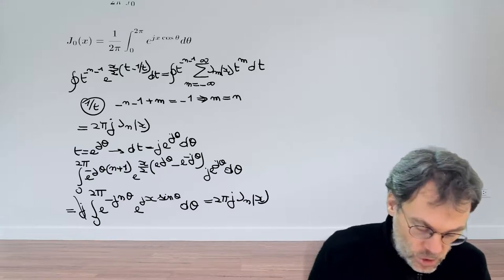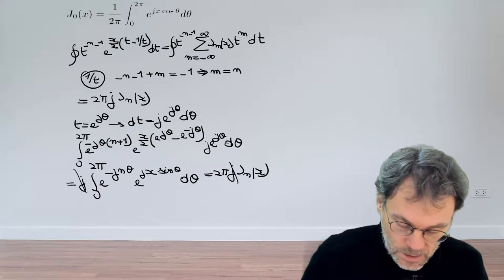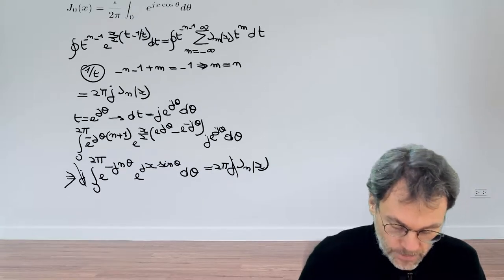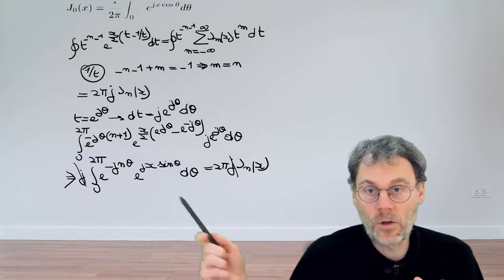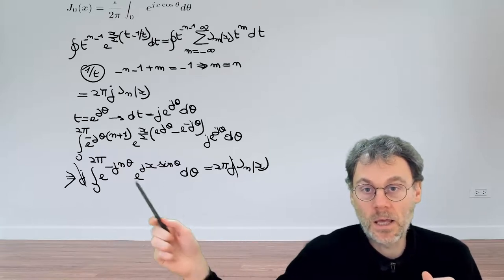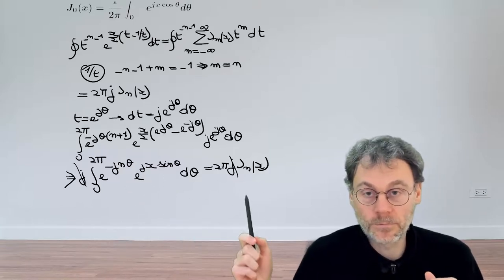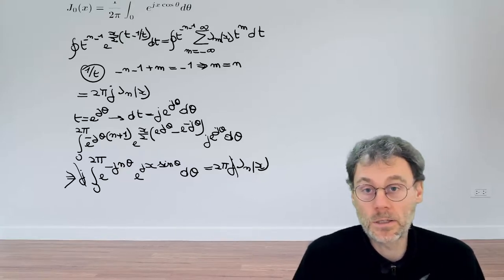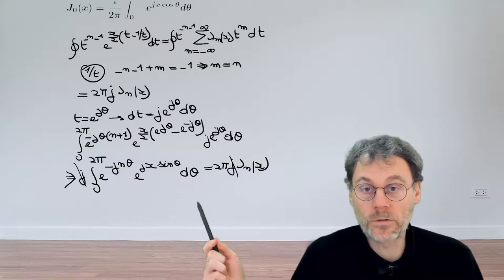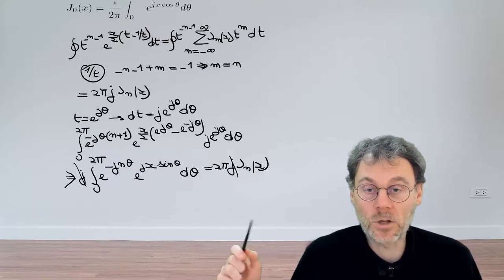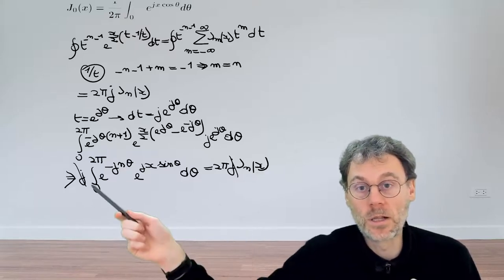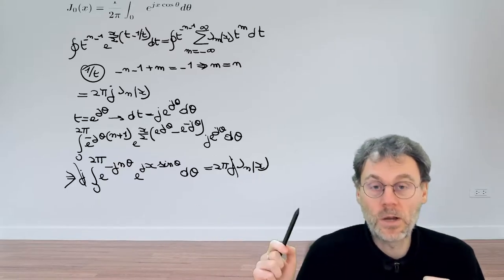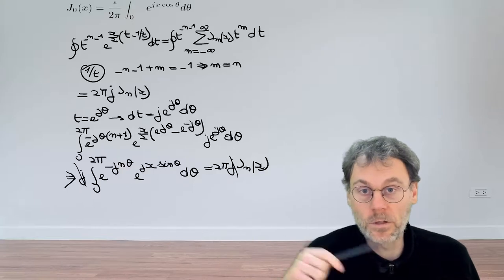So we can get rid of the j obviously on both sides. Now we're almost there. Because what we have on the left hand side here is a complex exponential. So e to the power of j something. We know thanks to Euler that this is equal to cosine of that something plus j sine of that something. Something that has a real and an imaginary part.